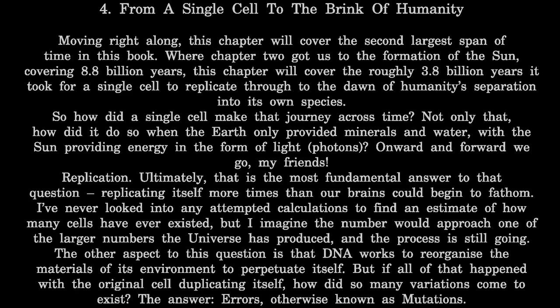Chapter 4: From a Single Cell to the Brink of Humanity. This chapter will cover the second largest span of time in this book. Where Chapter 2 got us to the formation of the Sun, covering 8.8 billion years, this chapter will cover the roughly 3.8 billion years it took for a single cell to replicate through to the dawn of humanity's separation into its own species.